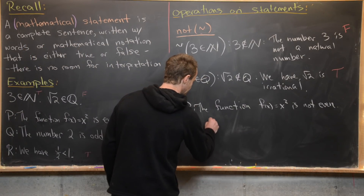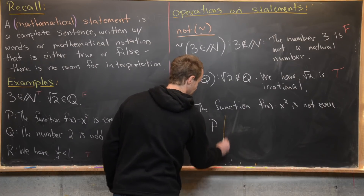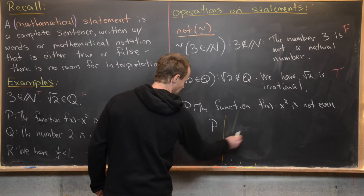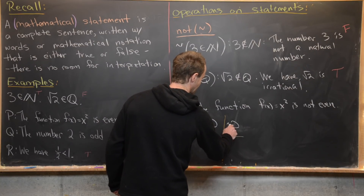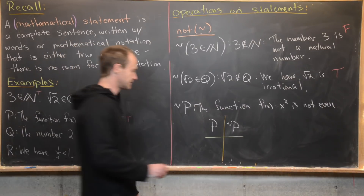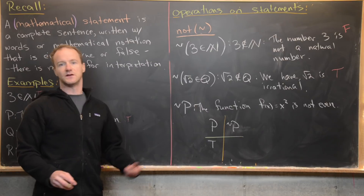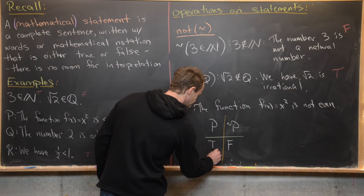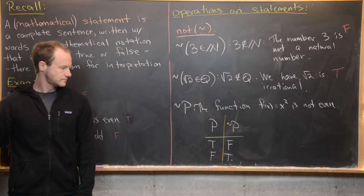For the truth table of NOT, we only need one input p and two cases. If something is true, its negation — NOT p — is false. And if something starts as false, its negation is true.